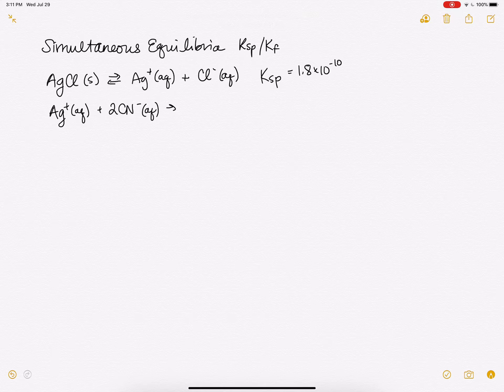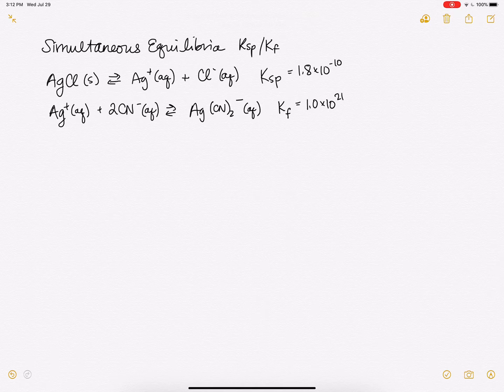When you have two cyanide ions there, you can make this complex ion AgCN2 minus. So this one is a complex ion and this is the K of formation for that reaction and it has a huge K, 1 times 10 to the 21. In other words, this is very strongly favored and the formation of the complex happens pretty completely when you put cyanide into the solution.